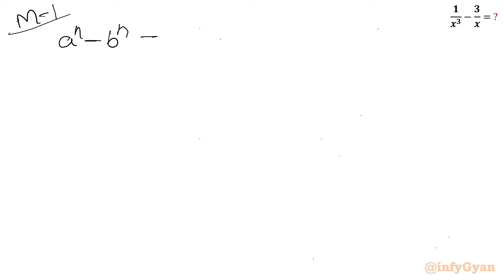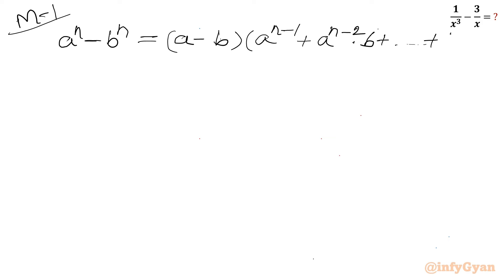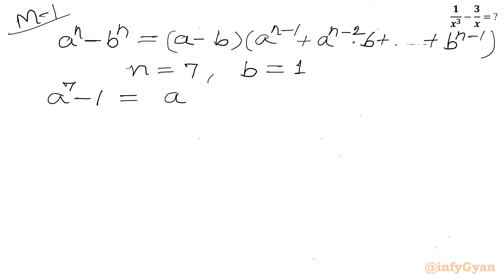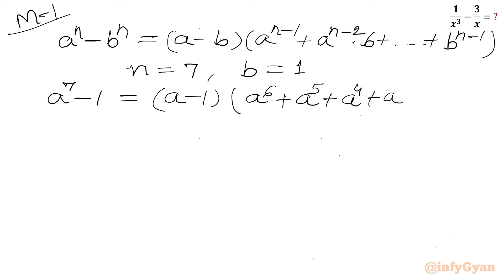For this I need to write this identity first: a^n minus b^n equals (a minus b) times (a^(n-1) plus a^(n-2)·b plus ... plus b^(n-1)). Now as per our problem, n will be equal to 7 and b will be equal to 1. So I can write a⁷ minus 1 equals (a minus 1) times (a⁶ plus a⁵ plus a⁴ plus a³ plus a² plus a plus 1).